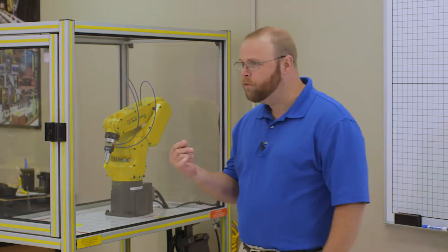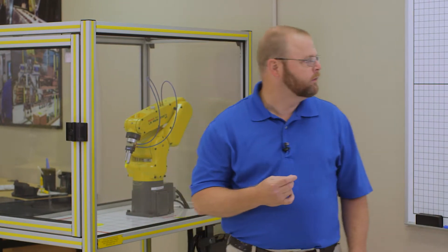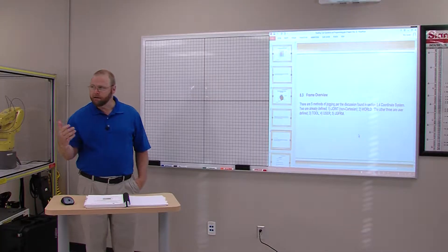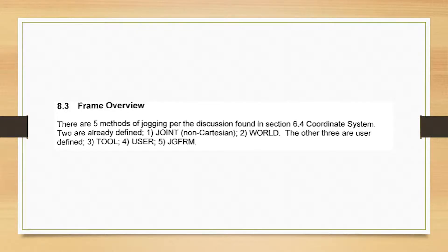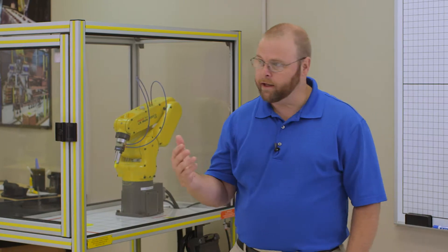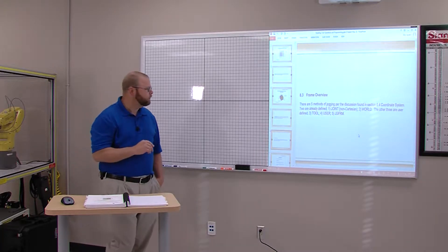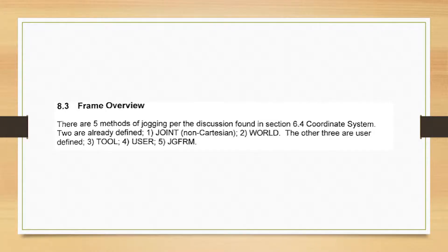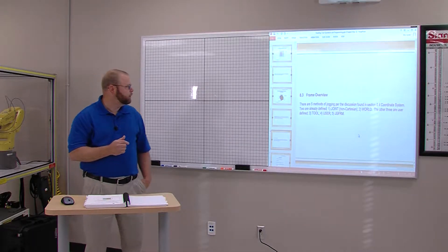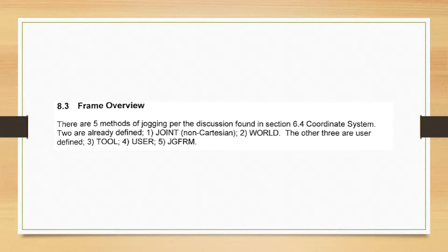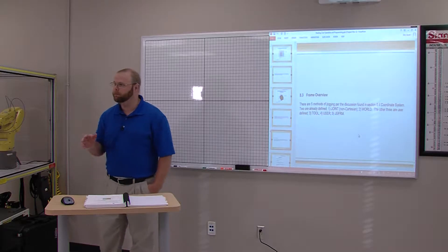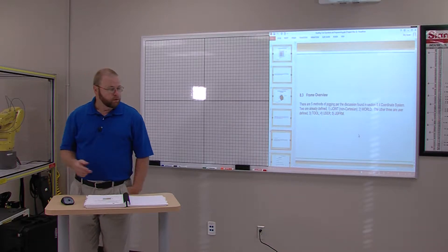Here is the overview for the frames we'll be covering in this lecture. There are five methods that we will move the robot with the teach pendant. Two are defined from the manufacturer and we can't alter any coordinates about those. That's joint, which is a non-Cartesian movement of the robot, and the world frame, which is defined from the manufacturer and cannot be changed. The other three frames are the tool frame, the user frame, and the job frame — those are all assigned or defined by you, the user.